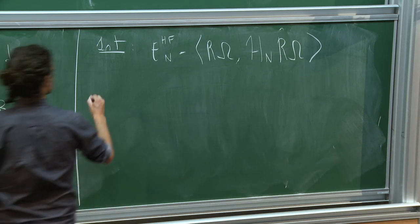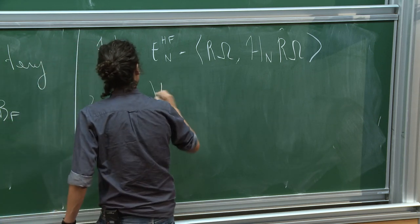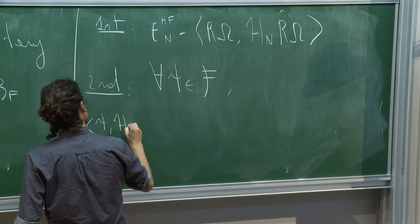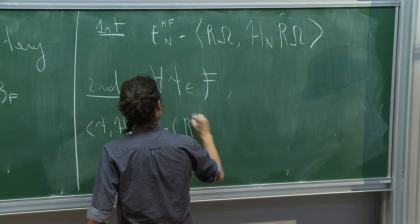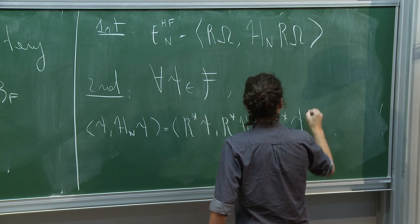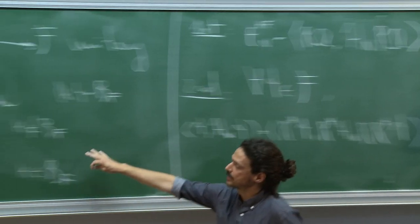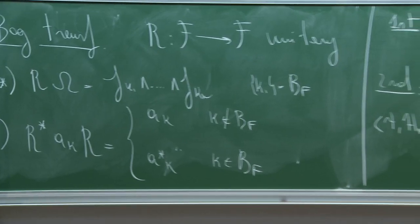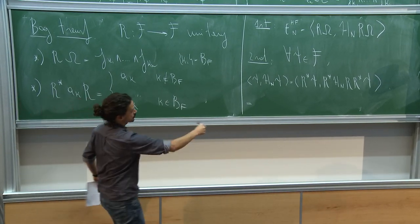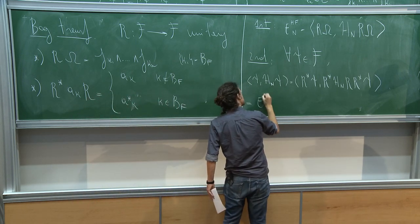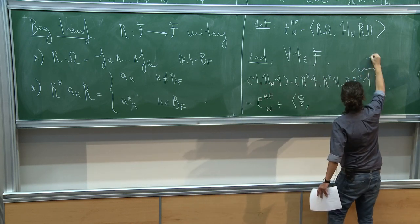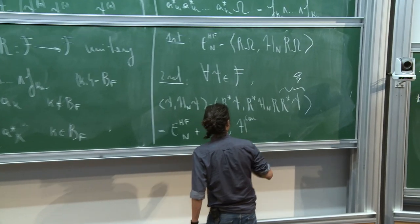For any vector in Fock space, using the unitarity of R, the energy can be written as the energy of the free Fermi gas plus the expectation value of a correlation Hamiltonian H_corr over R^* psi. This is obtained by conjugating the original Fock space Hamiltonian with R, bringing the result into normal order by anti-commuting operators, yielding a constant term (the free Fermi gas energy) plus the correlation Hamiltonian contribution.